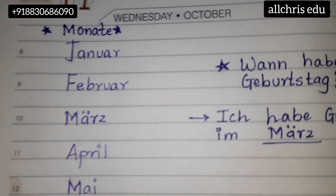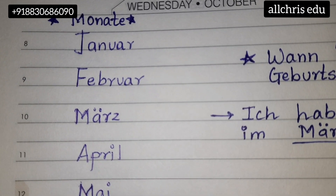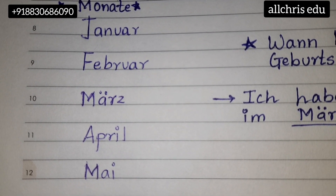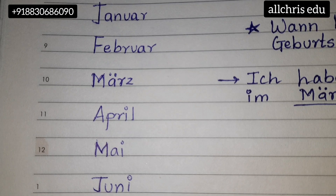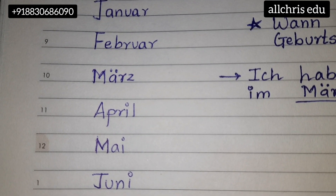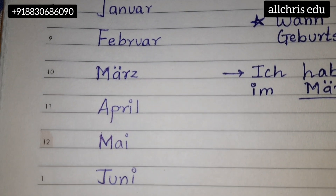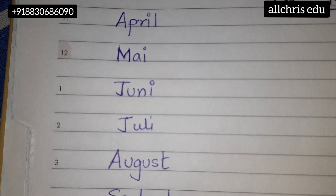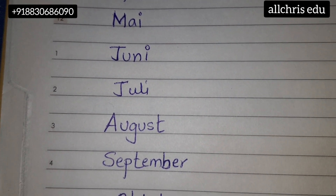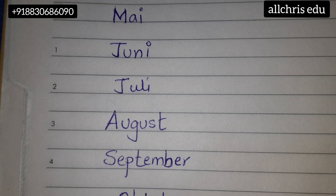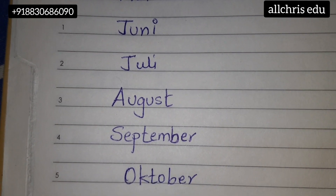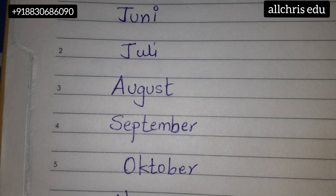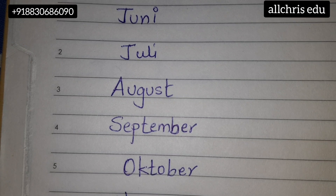April — A-P-R-I-L. The Ä means the sound of 'a' — please underline A for apple and write it. Next is Mai — M-A-I — Mai. Then Juni — J-U-N-I. J has a sound of 'yo,' so we say it as 'Yooni.' Okay, Juni.